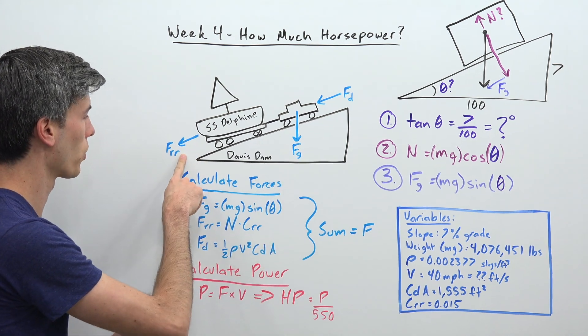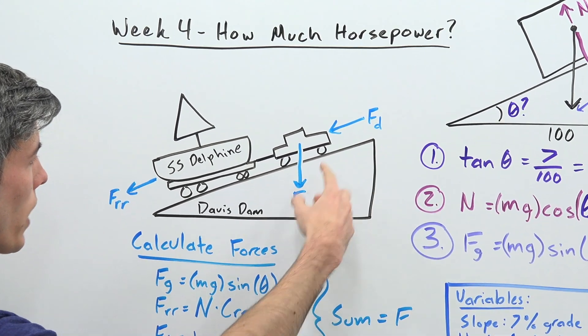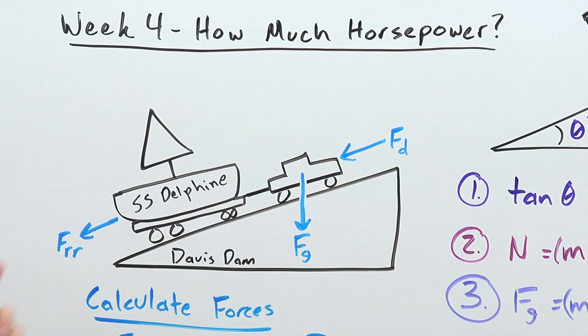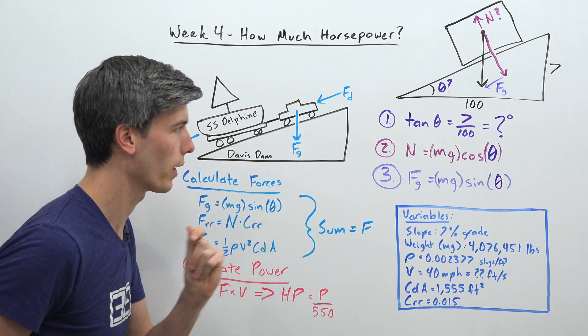So we of course have the force of rolling resistance, the force of aerodynamic drag, and the force of gravity trying to pull this entire system down that grade. So in order to calculate these forces first of all we need to know the angle of the grade.